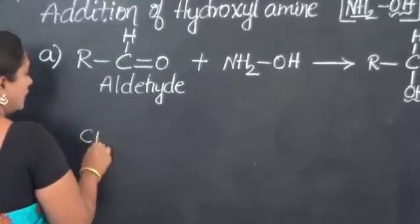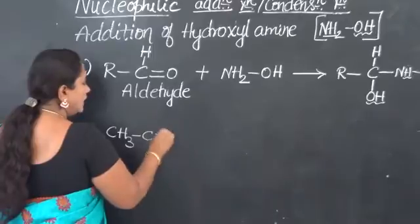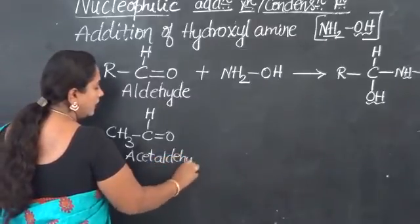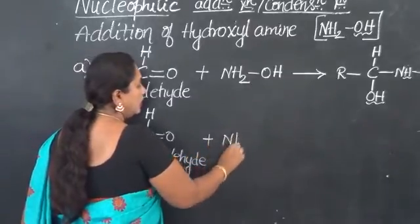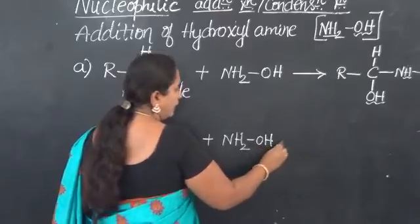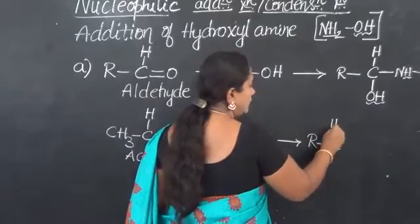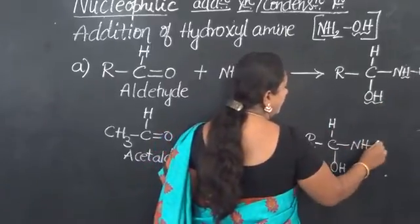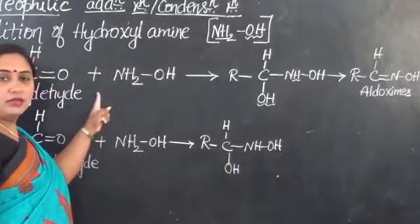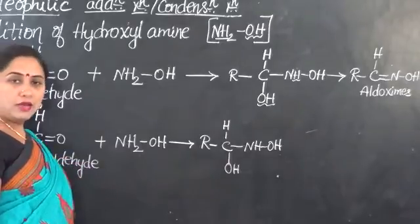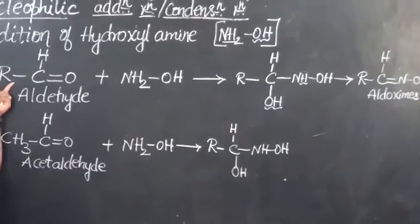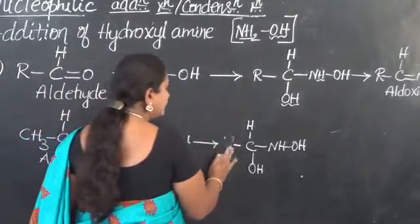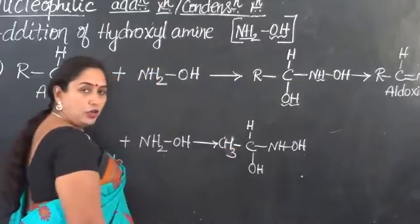As an example for aldehyde, let us take acetaldehyde. The formula of acetaldehyde is CH3CHO. Acetaldehyde reacts with hydroxyl amine NH2OH, resulting first in the formation of an addition compound, with OH here and NH linked with H. If you understand the general formula, you can write any number of equations — just replace R with the appropriate group. In this case, we replace R with CH3.